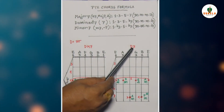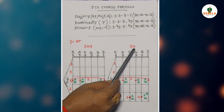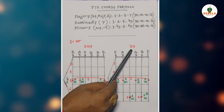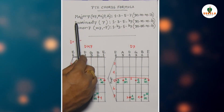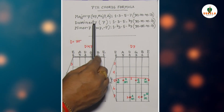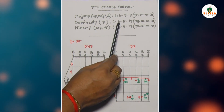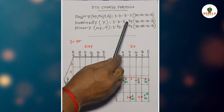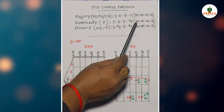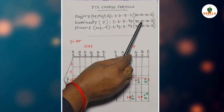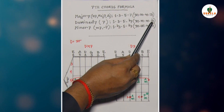D dominant 7th chord — এটা হচ্ছে symbol D7। Dominant 7th chord-এর formula হচ্ছে 1, 3, 5, flat 7। সুধোগা, পা, কমোলি।